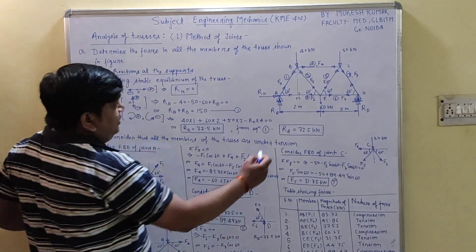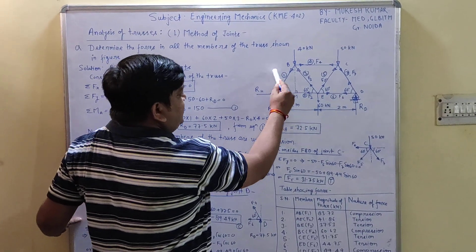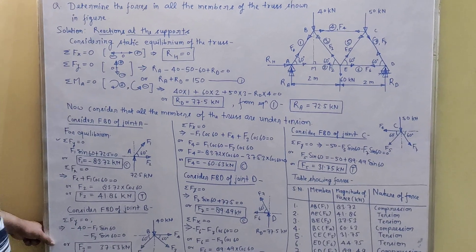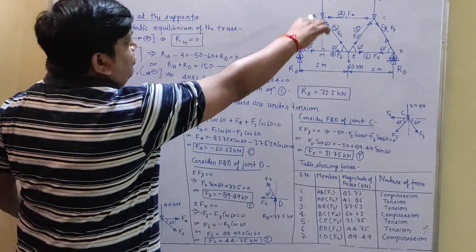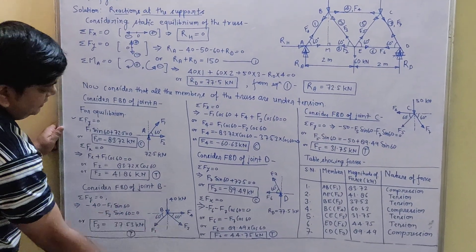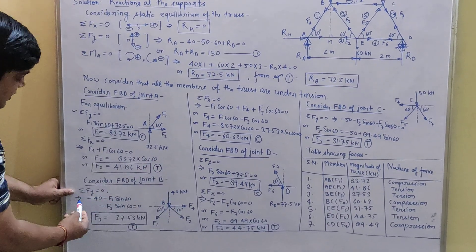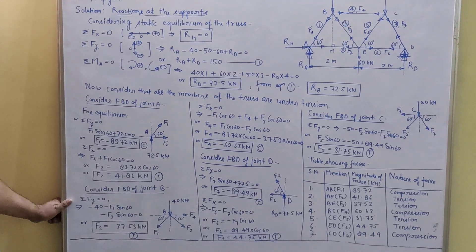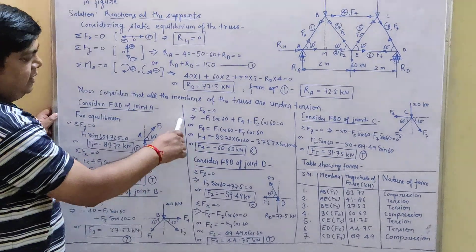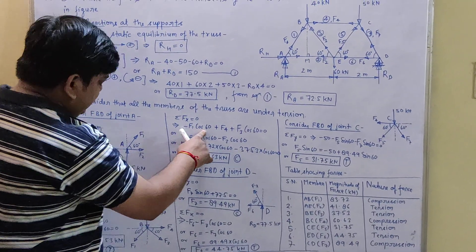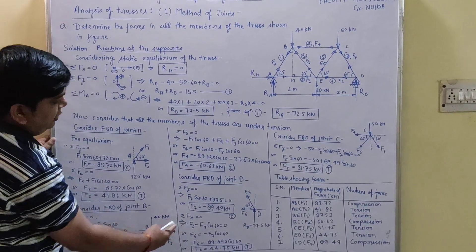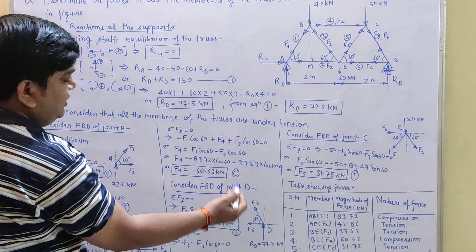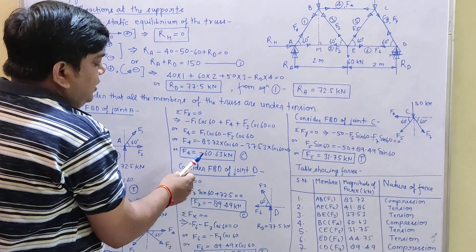Now move to joint B. We already know the force in member AB, which is F1. At joint B there are two unknowns: F3 and F4. Draw the free body diagram of joint B, showing forces along their respective angles. Balancing forces in the vertical direction gives F3 = 37.53 kN (tensile). Balancing forces in the horizontal direction: −F1 cos 60° + F4 + F3 cos 60° = 0. Solving gives F4 = −60.60 kN, which is compressive.